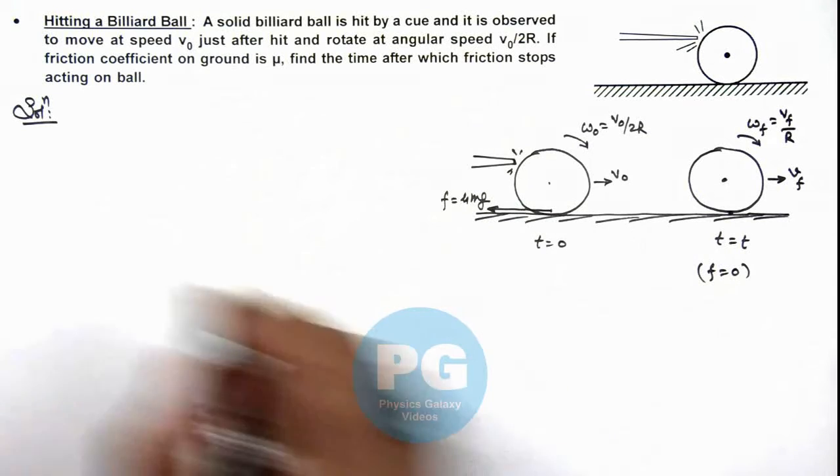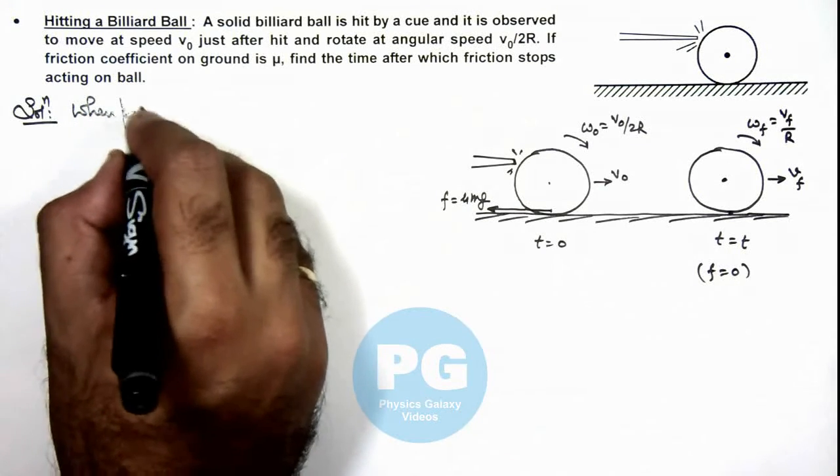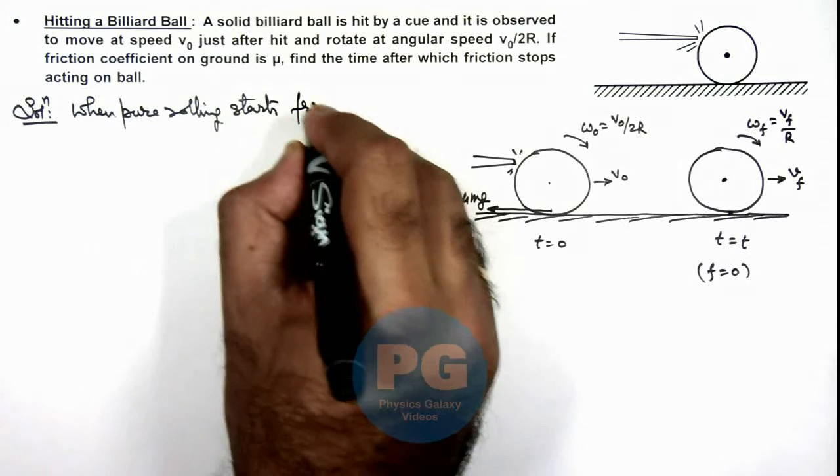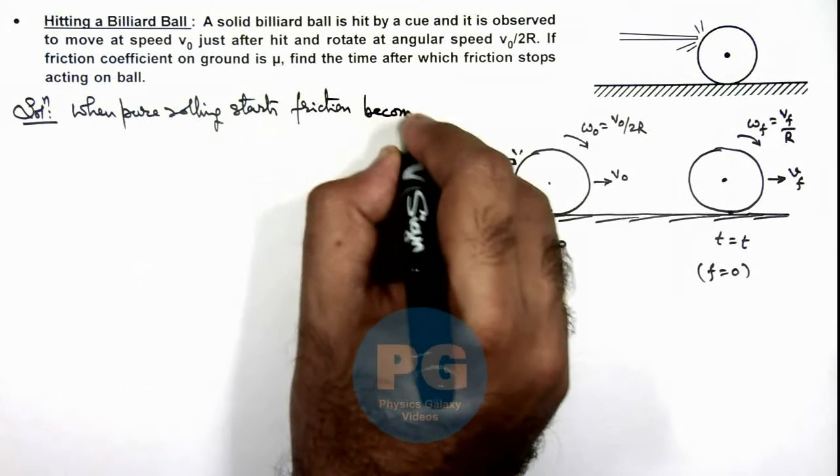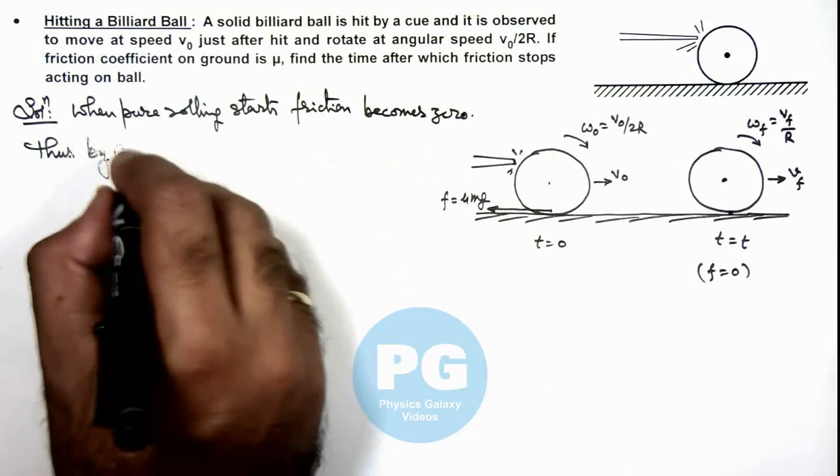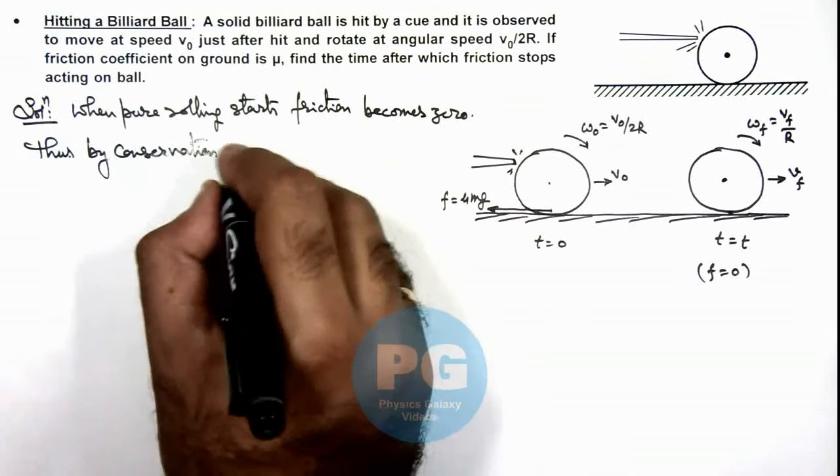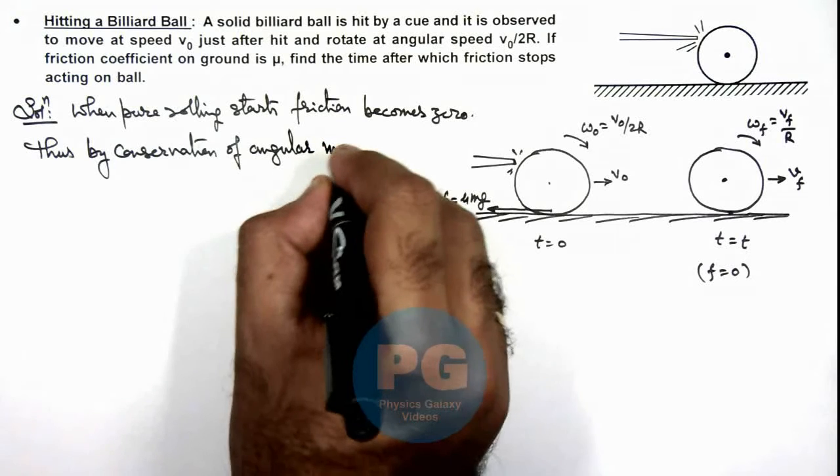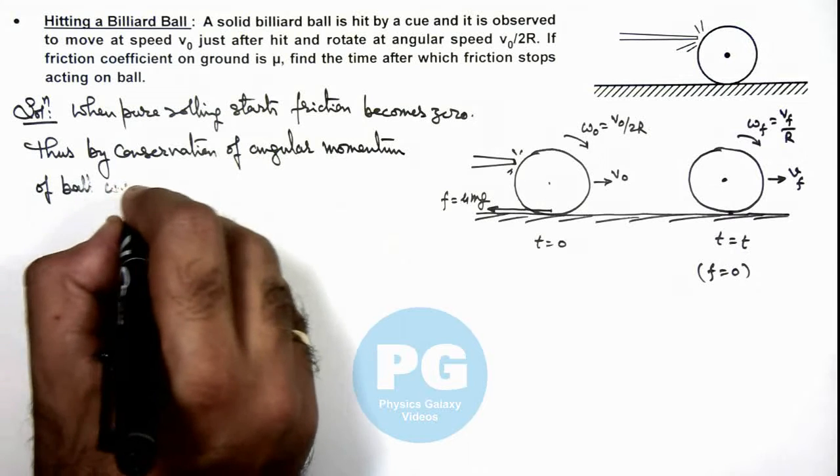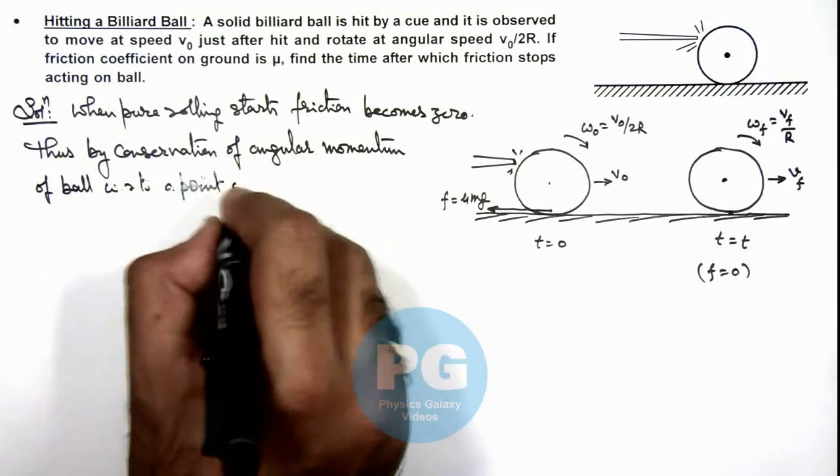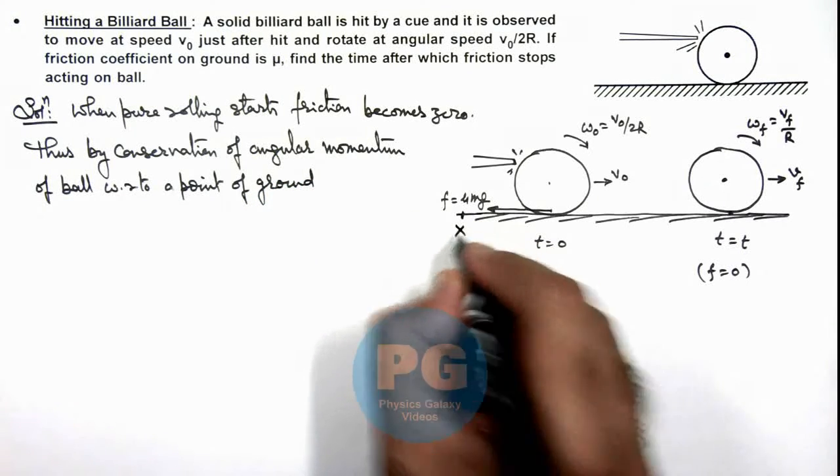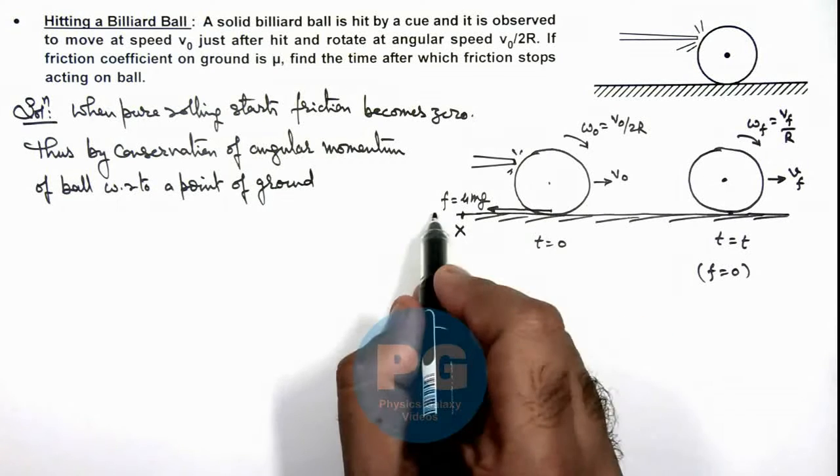In this situation when pure rolling starts, friction becomes zero. Thus here we can write by conservation of angular momentum of ball with respect to a point on ground. A point on ground, say point X, is the only point about which the torque of friction is zero.